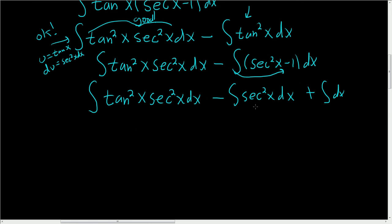And if it's not clear, this is going to be extremely easy here. This is just tangent. What's a function whose derivative is secant squared? Tangent. So that part's easy. And this is also absolutely trivial. This is just x.